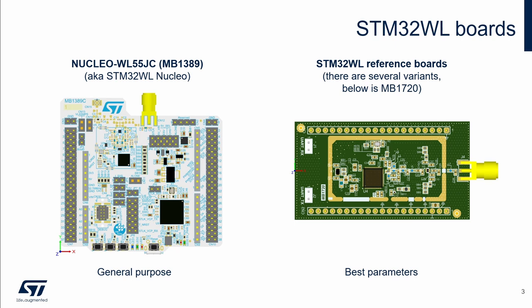The next type of boards are the STM32WL reference boards. There are several types of reference boards which differ, for example, in STM32WL package, number of PCB layers, and whether an RF switch is used. The reference boards use a recommended layout to get the best parameters, and this is the recommended source for new designs with STM32WL. The design files of the reference boards can be downloaded from ST.com.